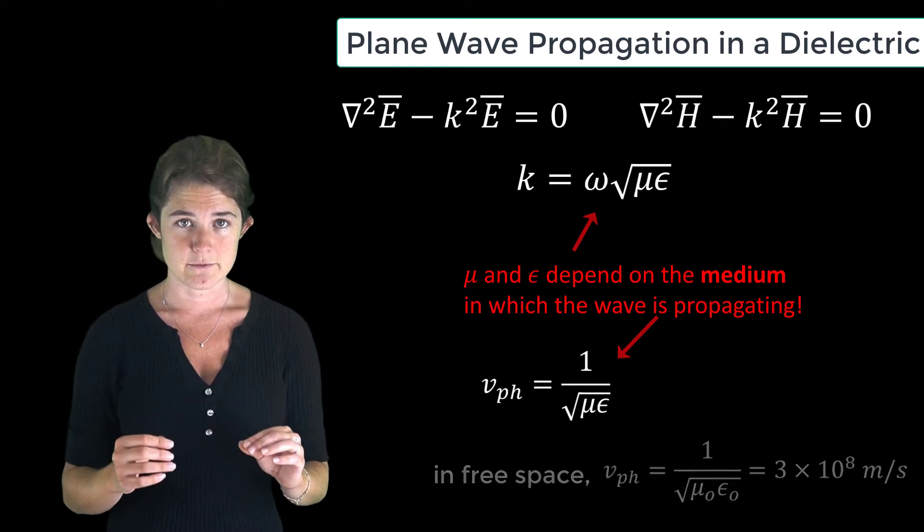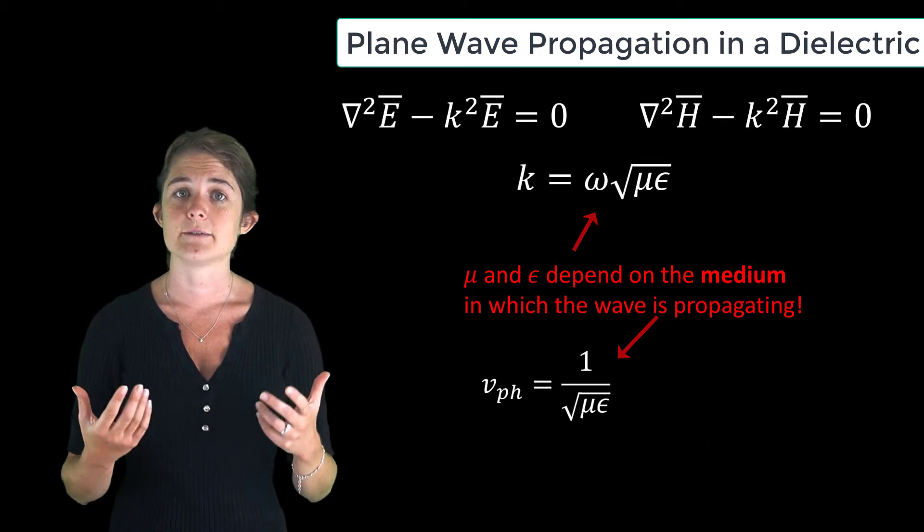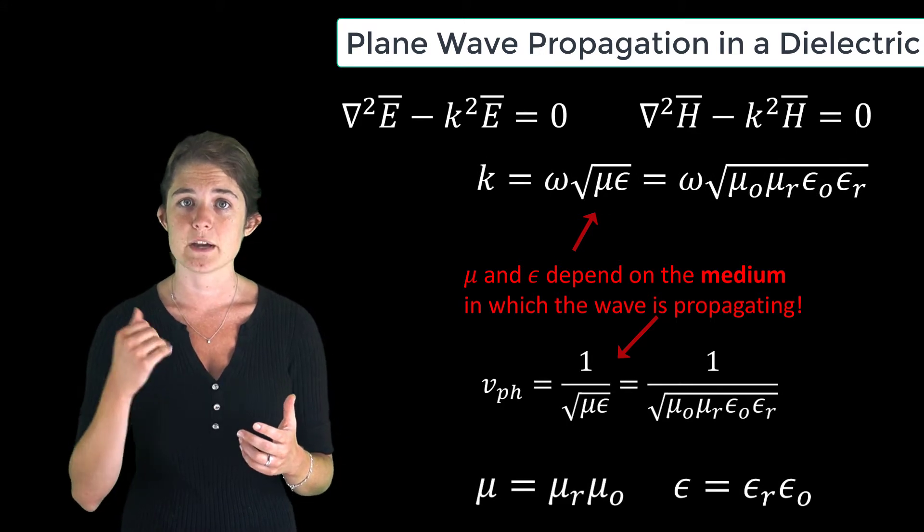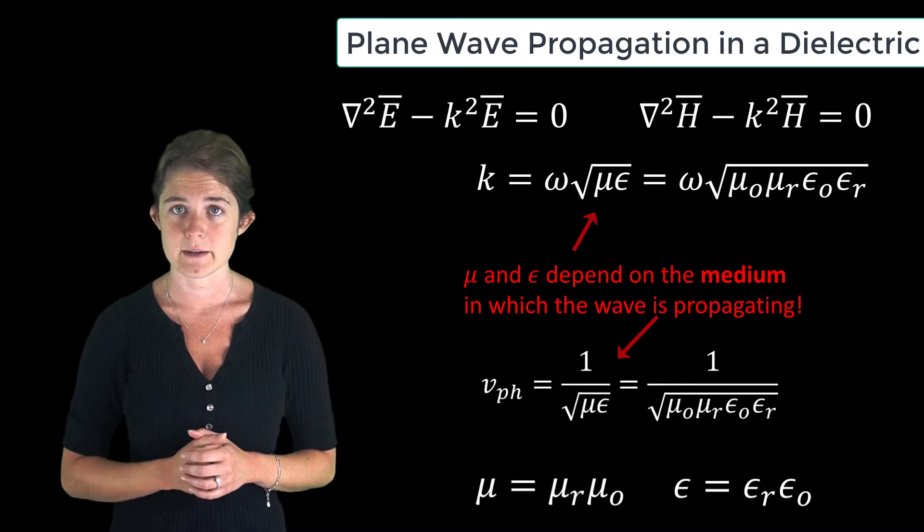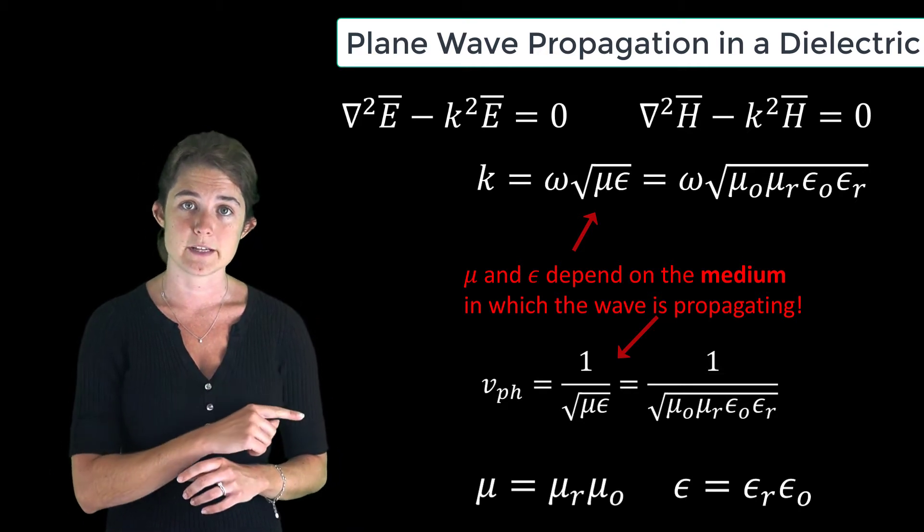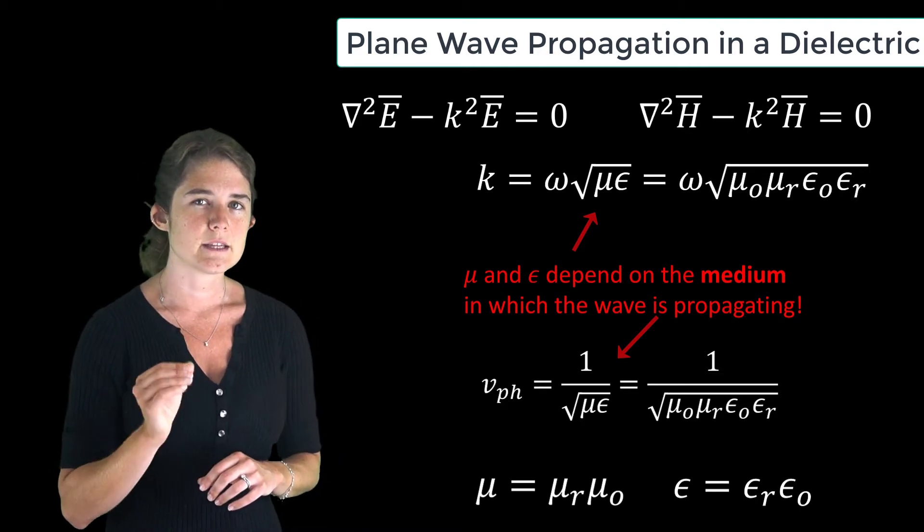But if we aren't in free space, mu and epsilon have to scale by the relative permeability and relative permittivity of the material in which the wave is propagating. We can account for this pretty easily in the equations for wave number and phase velocity, but let's take this one step further.